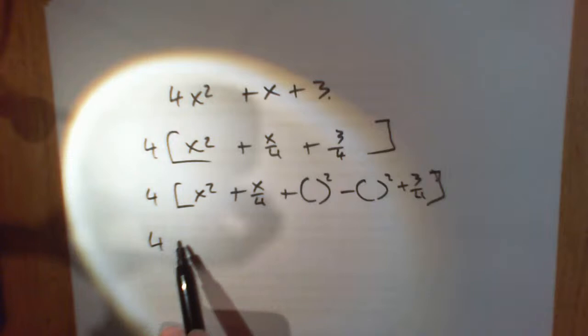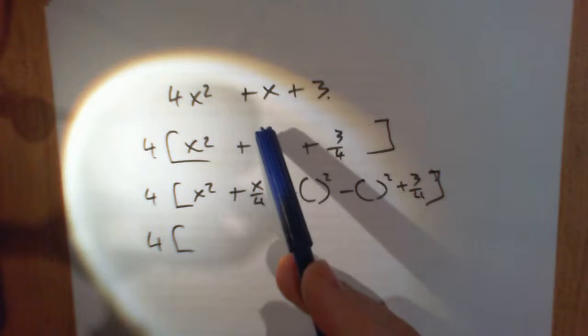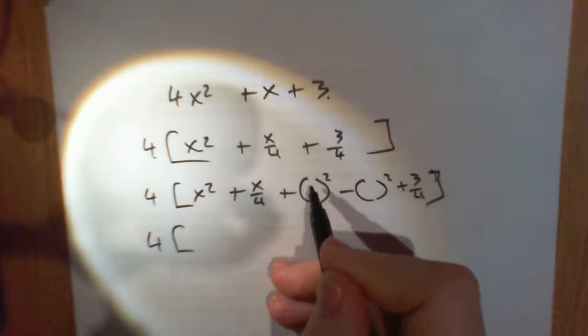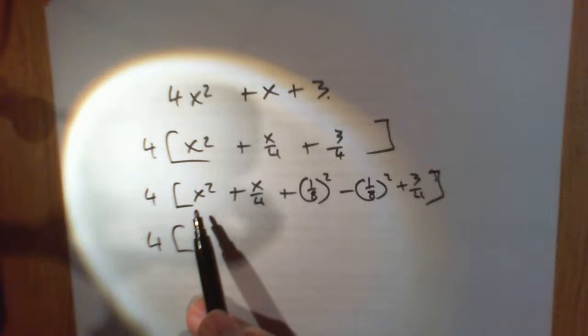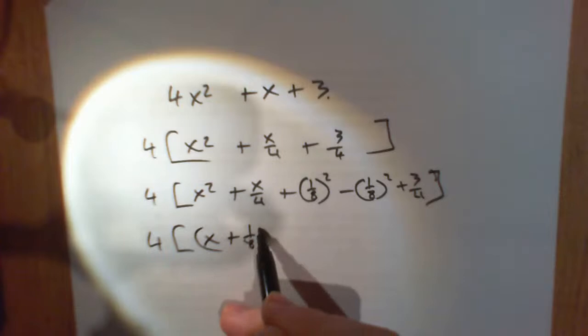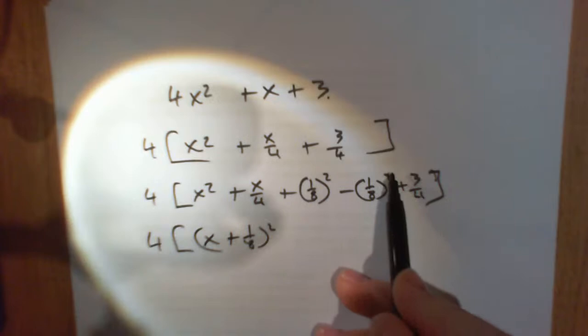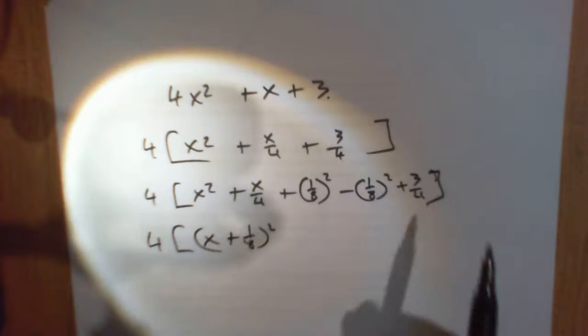So what's going to happen here? The coefficient of this is a quarter. So divide that by 2 is an eighth. So that's 1 over 8 squared, 1 over 8 squared. That's going to be x plus 1 over 8 squared. Now that's going to be 1 over 64 minus 1 over 64 plus 3 quarters.